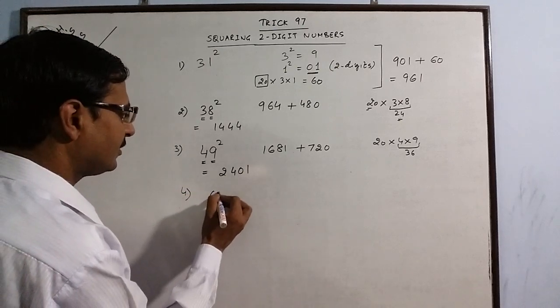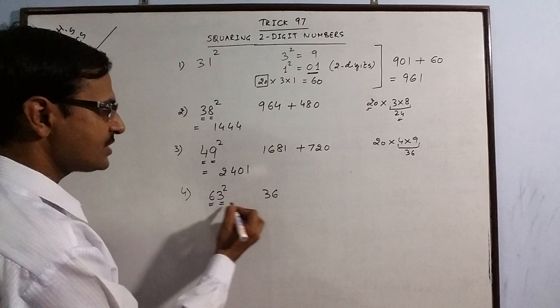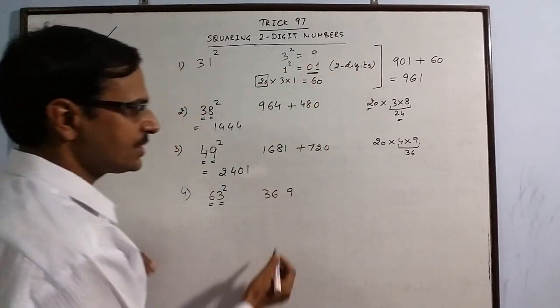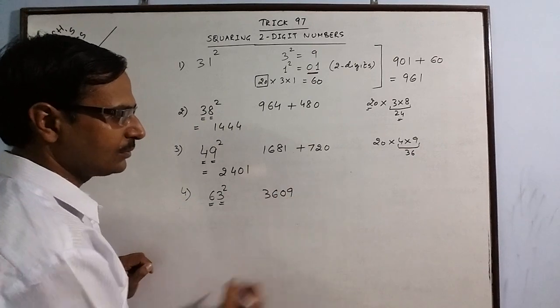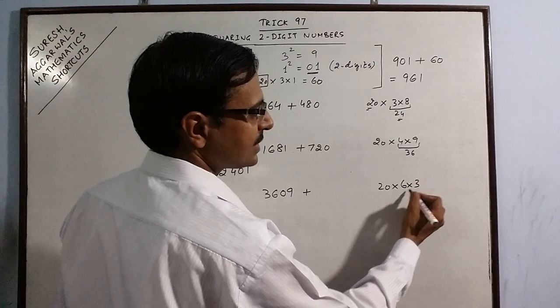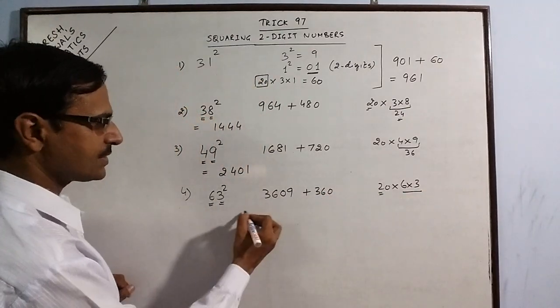Say 63. Now 6 square is 36, 3 square is 9. Remember I told you in the second square you need to have two digits - here we have one digit, so put a zero. 20 times the product of the digits, 6 into 3 is 18, double of 18 is 36, so your answer is 3969.